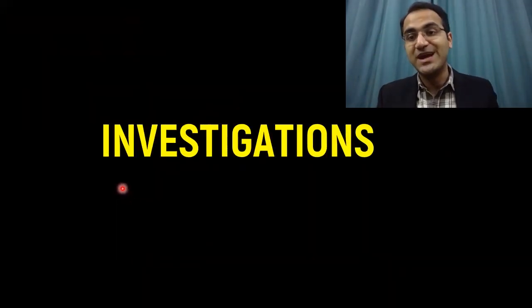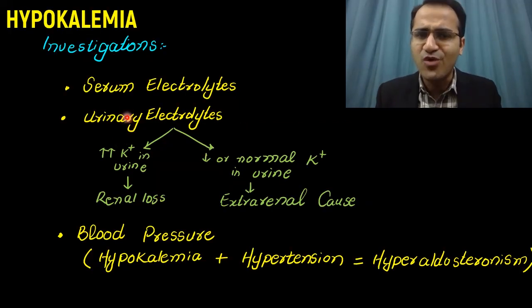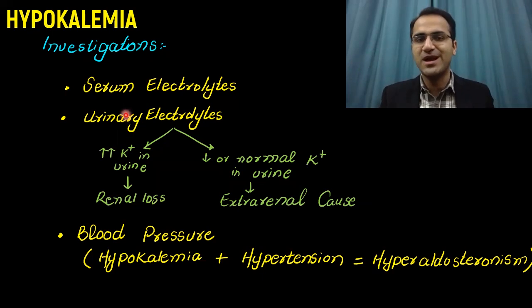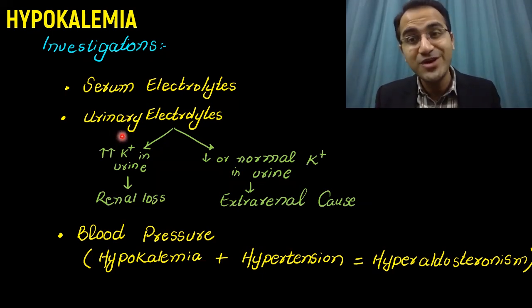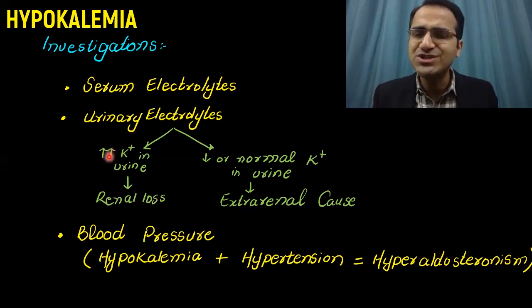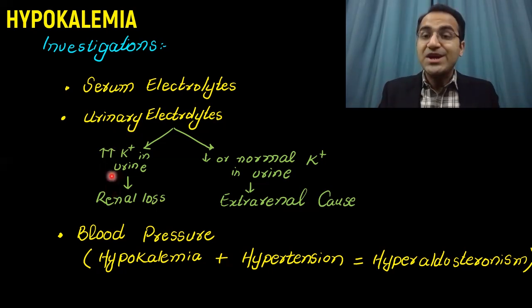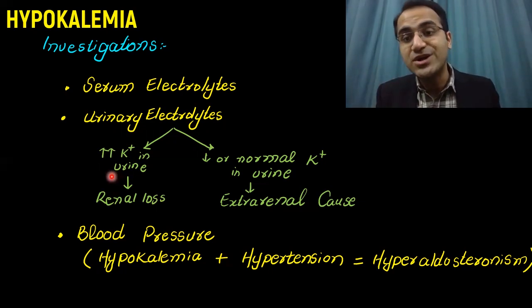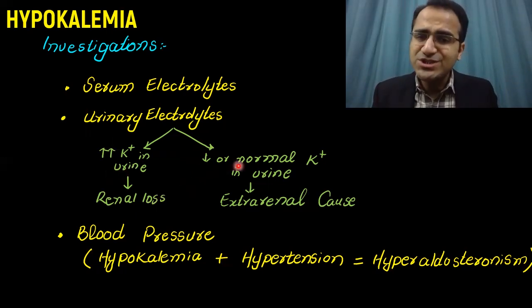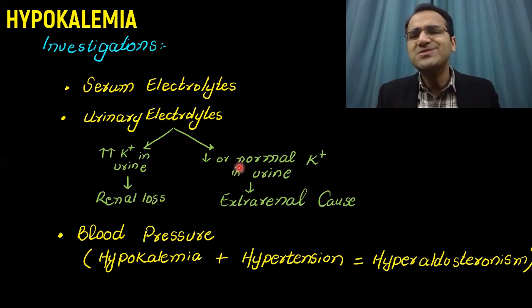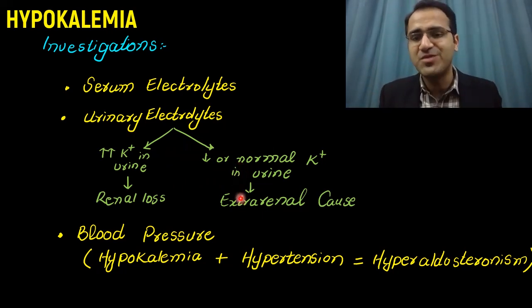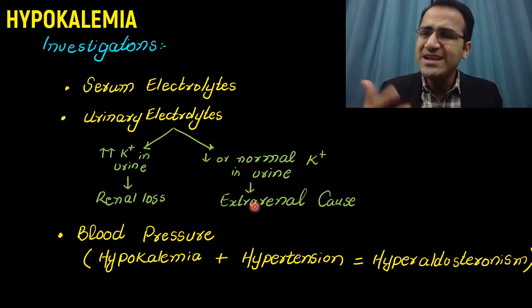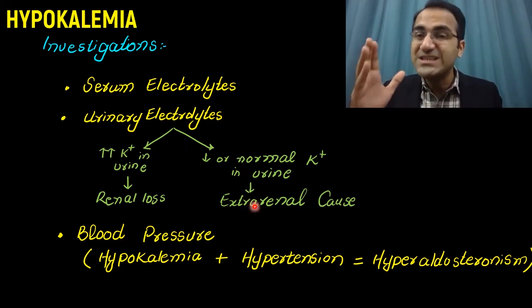Investigations in hypokalemia include serum electrolytes, which diagnose the condition. Urinary electrolytes are also important — if potassium in urine is elevated, it indicates renal loss due to diuretics, renal tubular acidosis, or Gitelman's and Bartter syndrome. If urinary potassium is low or normal, extra-renal causes are responsible, such as laxative use, diarrhea, and vomiting.